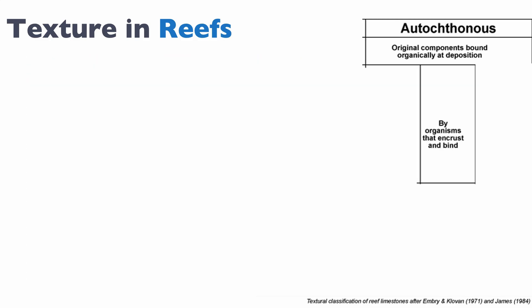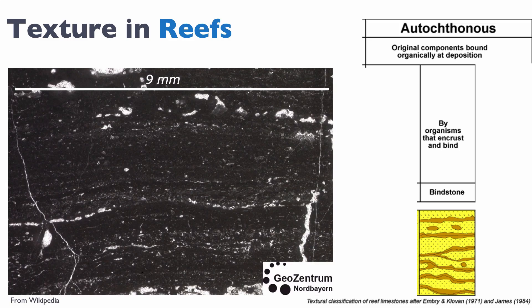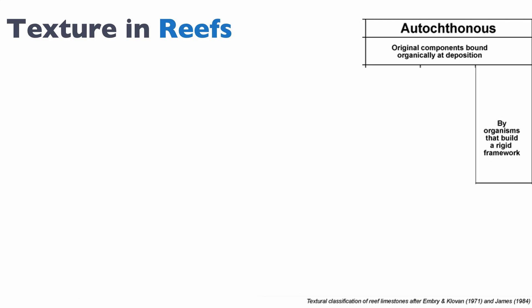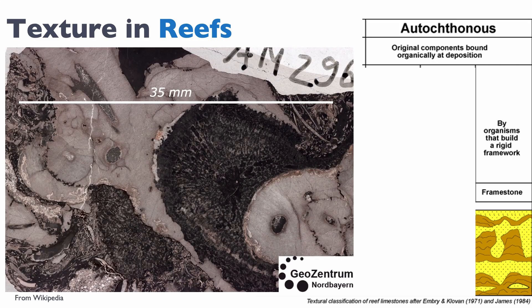If the organisms are encrusting or binding, then we have what is known as a bindstone. Here's an example: an algal mat that binds the sediment together. Finally, you can also have organisms that build a rigid framework — like a full reef — and then we talk about a framestone. Here's an example of an ancient reef that is interconnected and forms a framestone.